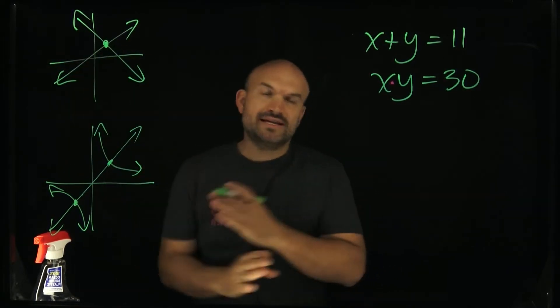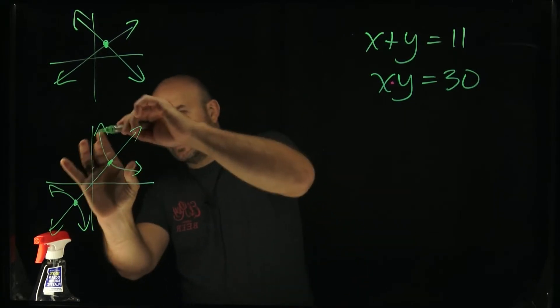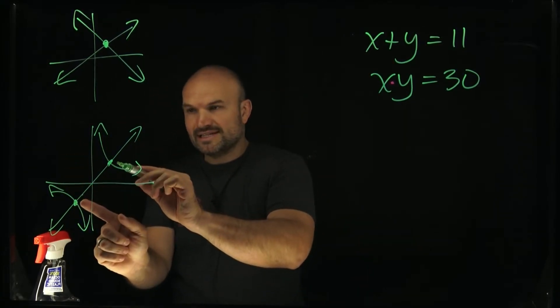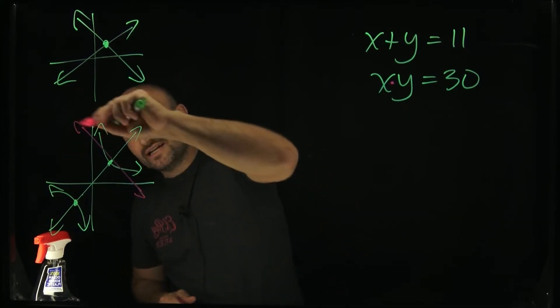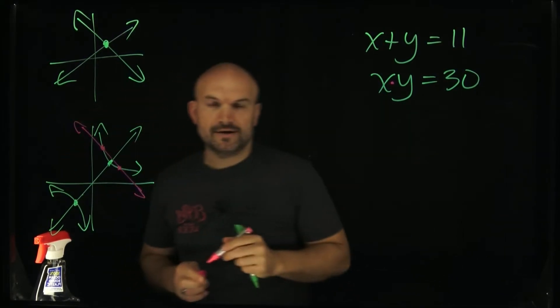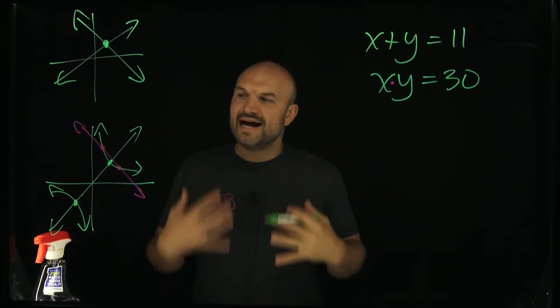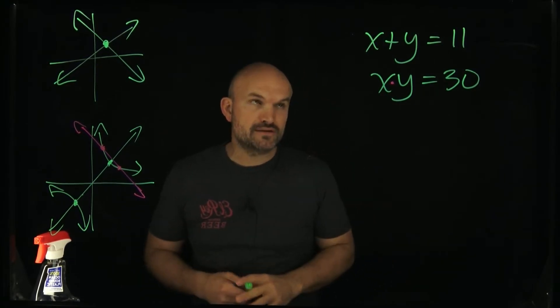...what I'm trying to represent is there are two opportunities for this graph to be able to intersect. Where two lines can only intersect at one point, here you could intersect at two points for both of these curves. So it's important to understand that a curve is going to provide us different options for what our solutions could be.